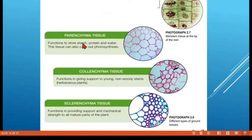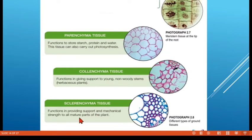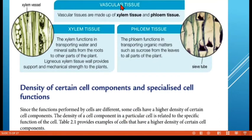Parenchyma tissue functions to store starch, protein, and water, and can also carry out photosynthesis. Collenchyma tissue gives support to young, non-woody stems — in herbaceous plants. Sclerenchyma tissue provides support and mechanical strength in all mature parts of the plant. Xylem tissue transports water and mineral salts from the roots to all other parts of the plant. Phloem tissue transports organic matter — the products of photosynthesis — from the leaves to all parts of the plant.